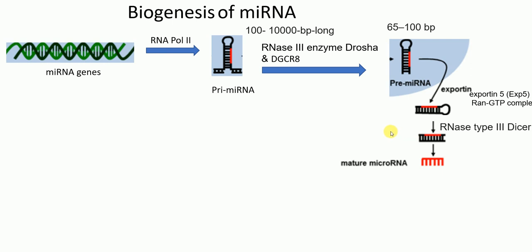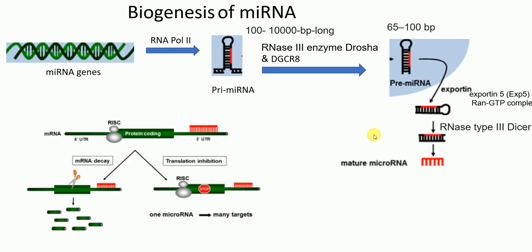There is a protein called Argonaute protein that interacts with this duplex and unwinds it. Only one strand — the guide strand — remains associated with what is called the RISC complex. RISC stands for RNA-Induced Silencing Complex, which consists of Argonaute protein, other proteins, and this guide strand micro RNA. The other strand is unbound and degraded. This guide micro RNA has complementary sequences to the 3' untranslated region of the target mRNA.